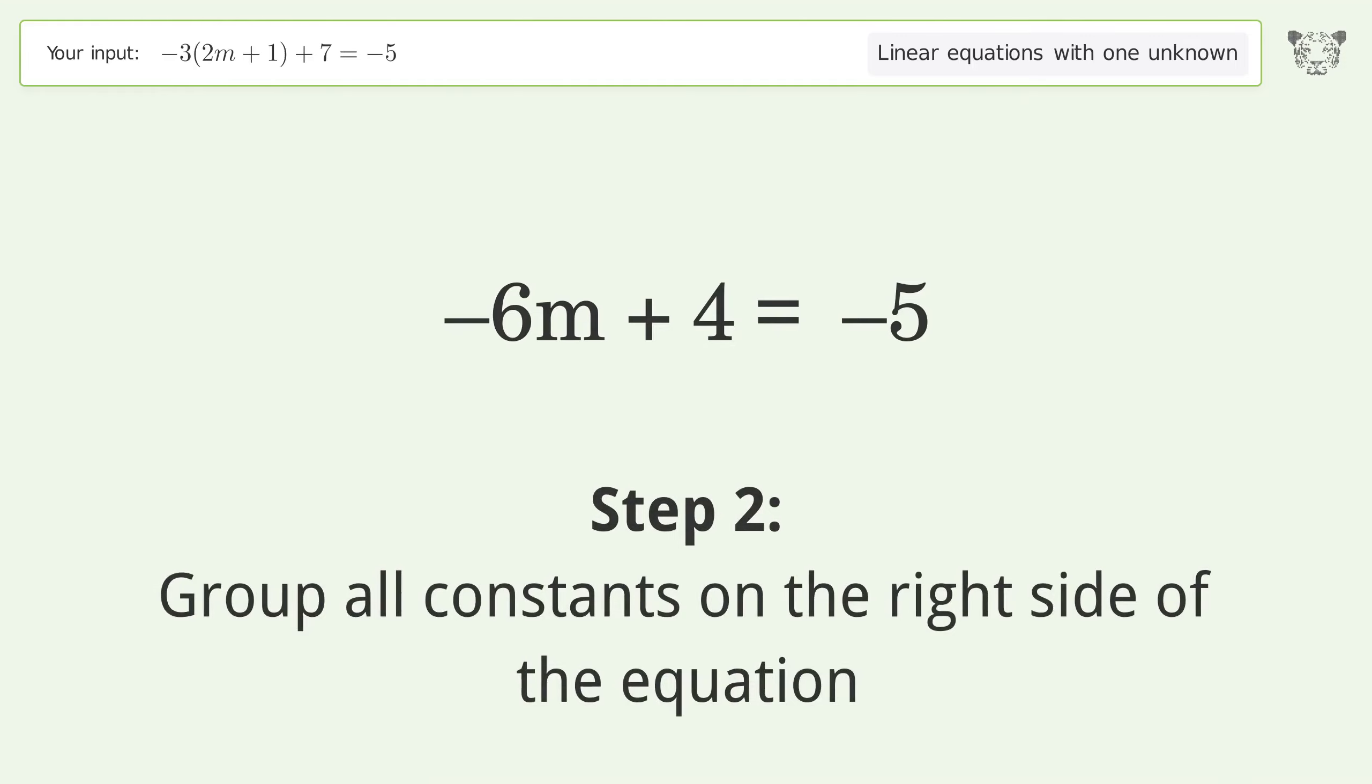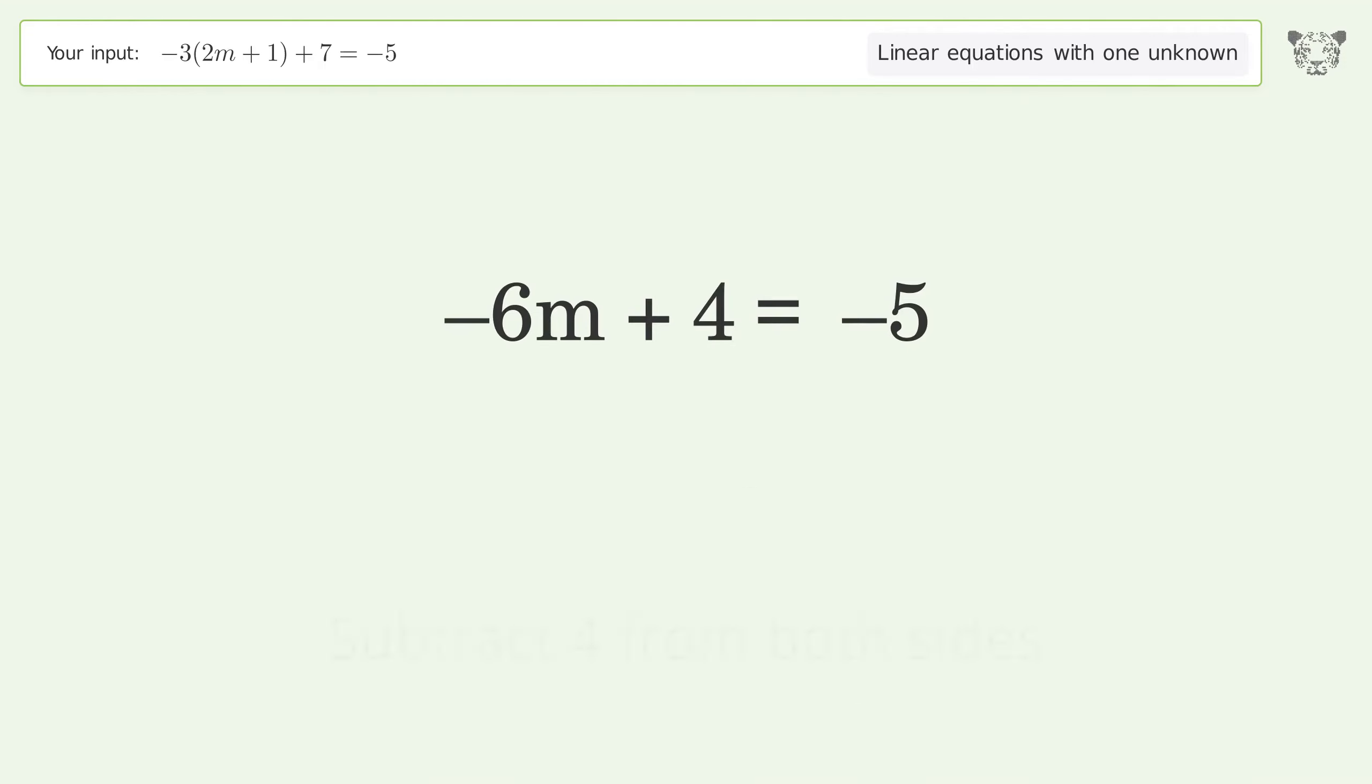Group all constants on the right side of the equation. Subtract 4 from both sides. Simplify the arithmetic.